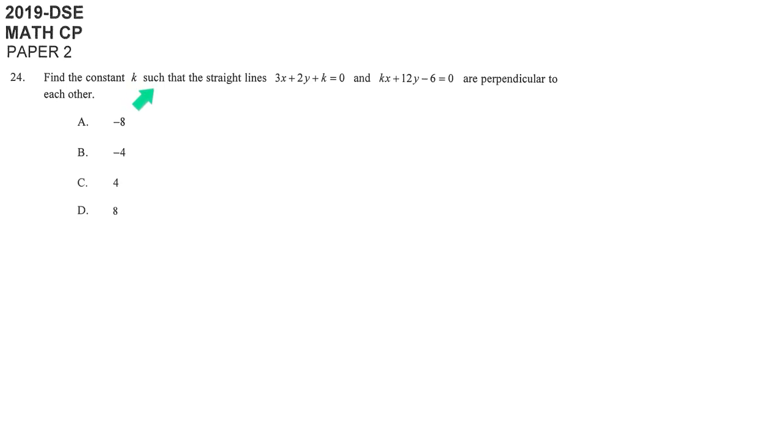We have to find the value of k such that these two lines are perpendicular to each other. Obviously, we are going to use the fact that if L1 is perpendicular to L2, then M1 times M2 is equal to negative 1. We are going to use this property.